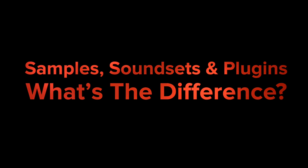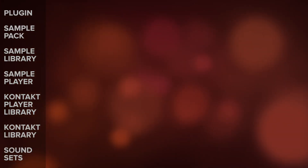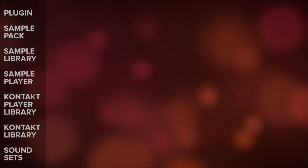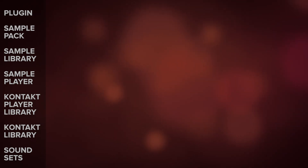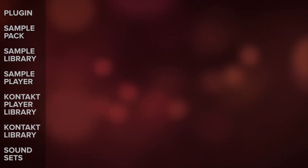Welcome. Ruben here for VST Buzz and in this video I'm going to be taking a look at the difference between common types of music software. The aim here is to give a general rundown of the variety of music making products out there and additional software that you'll need to run plugins, sample packs, sound sets and sample libraries. I'll also be looking at the difference between Native Instruments Kontakt Player and the full version of Kontakt. So let's break it down.